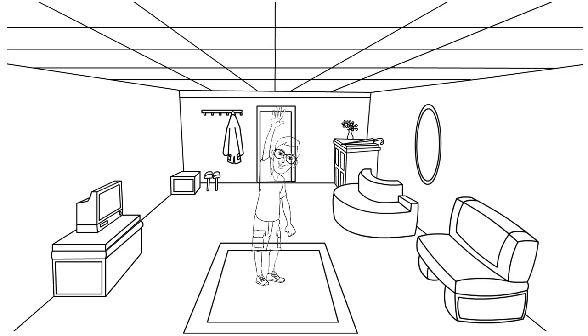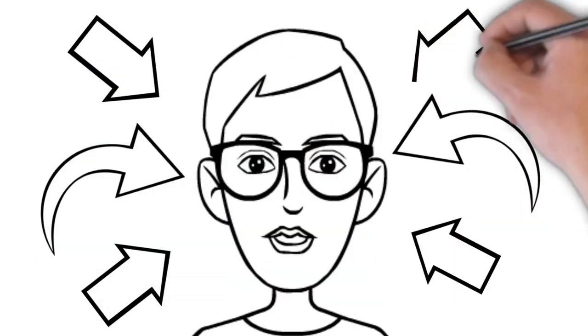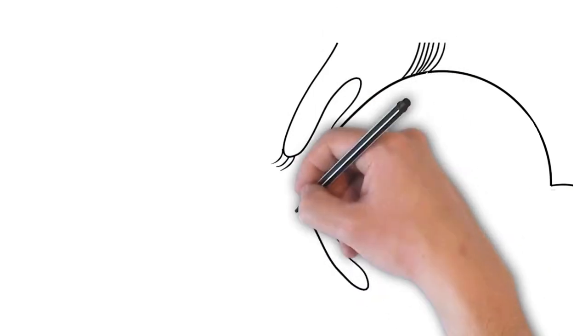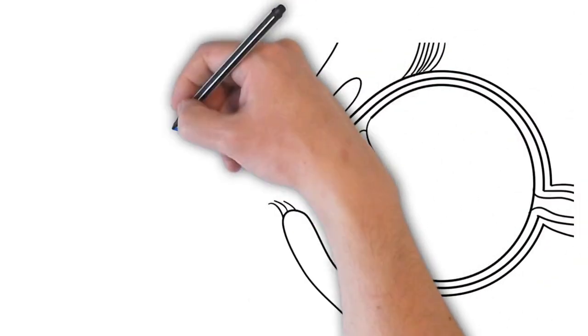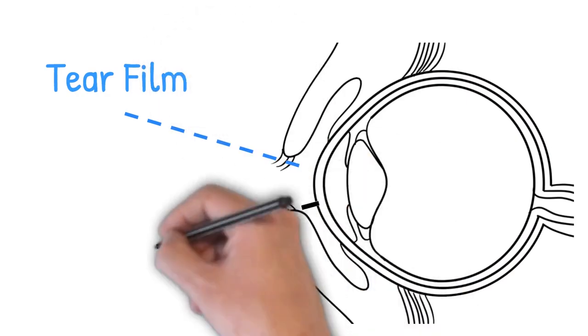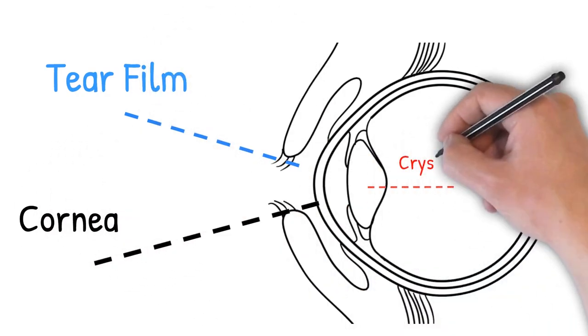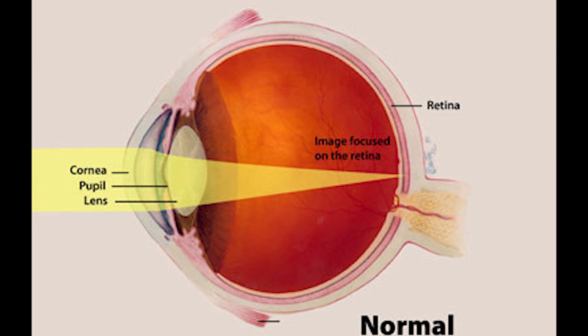To better understand nearsightedness versus farsightedness, let's go over the basic fundamentals of how the eyes actually work. When light hits objects all around us, that light bounces off those objects and enters into our eye. It goes through three different refractive structures that help bend the light: the tear film, the cornea — which is the window to the eye — and the crystalline lens, the focusing lens inside of the eye. Those structures bend the light and help focus it to the back of the eye, onto the human retina. That retina is basically like the satellite dish that picks up all that light information and then sends it to the visual processing centers of the brain, and that's what gives you your eyesight.